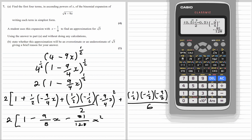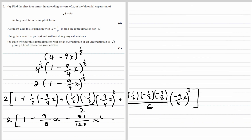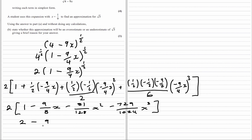For the x³ term, the numerator is (1/2)(−1/2)(−3/2) and the denominator is 6, giving −729/1024, so the x³ term is −729/1024 x³. Multiplying through by the 2 gives the final expansion: 2 − 9/4 x − 81/64 x² − 729/512 x³.